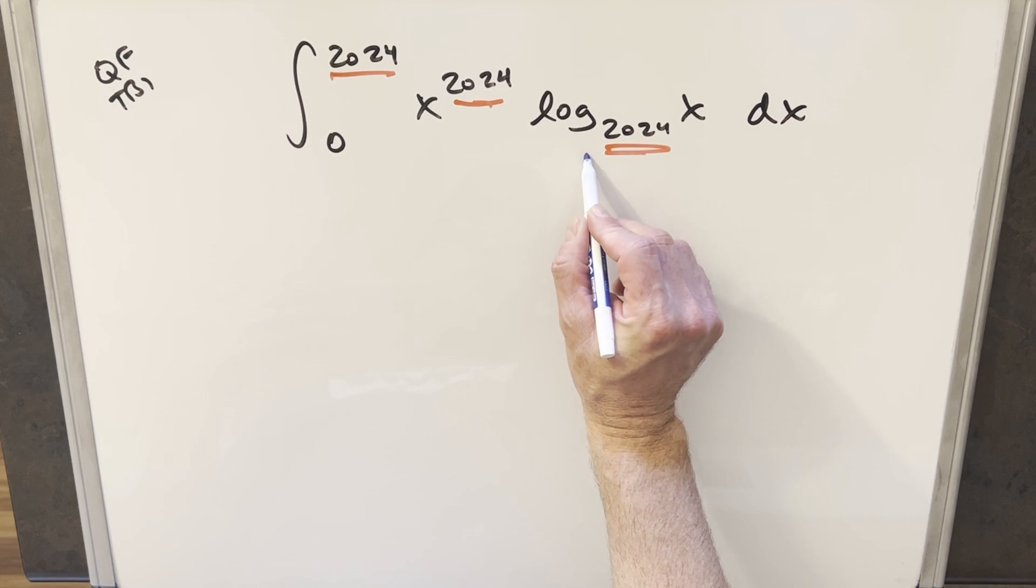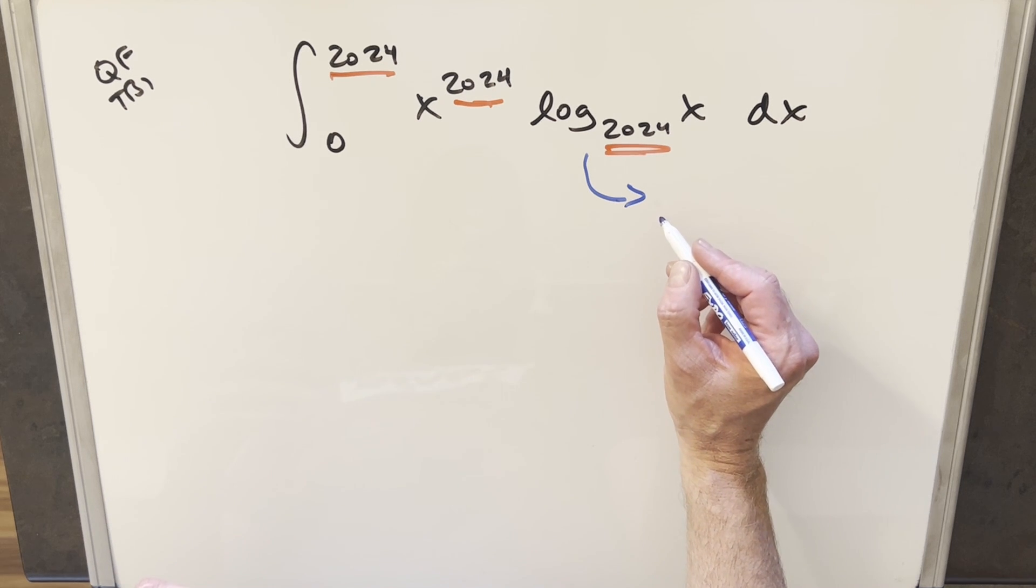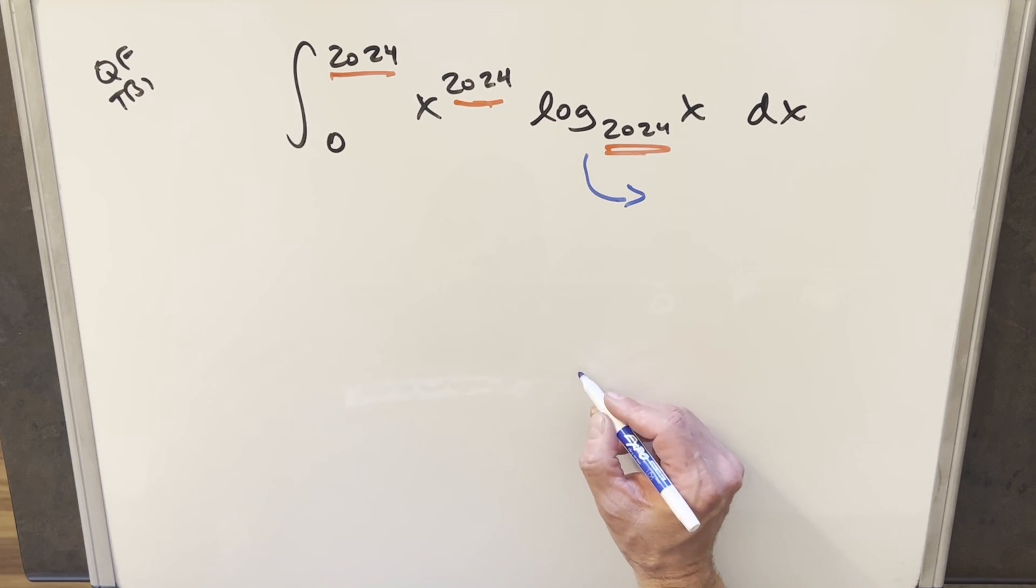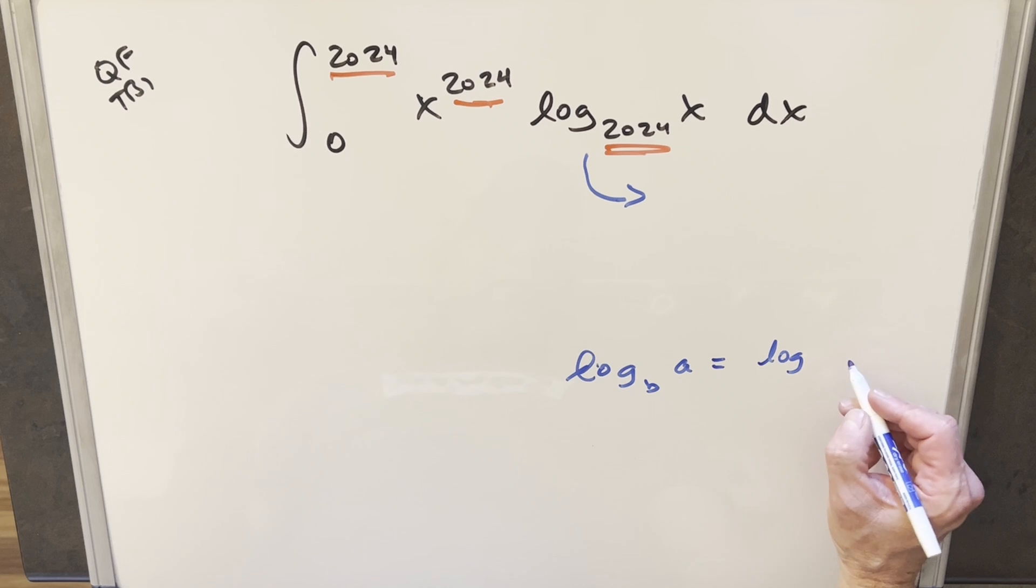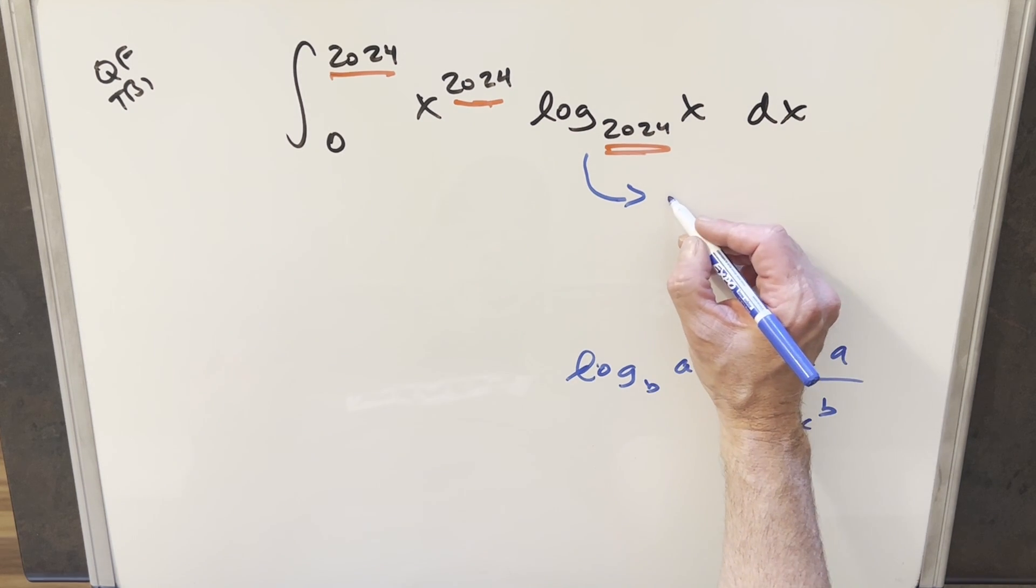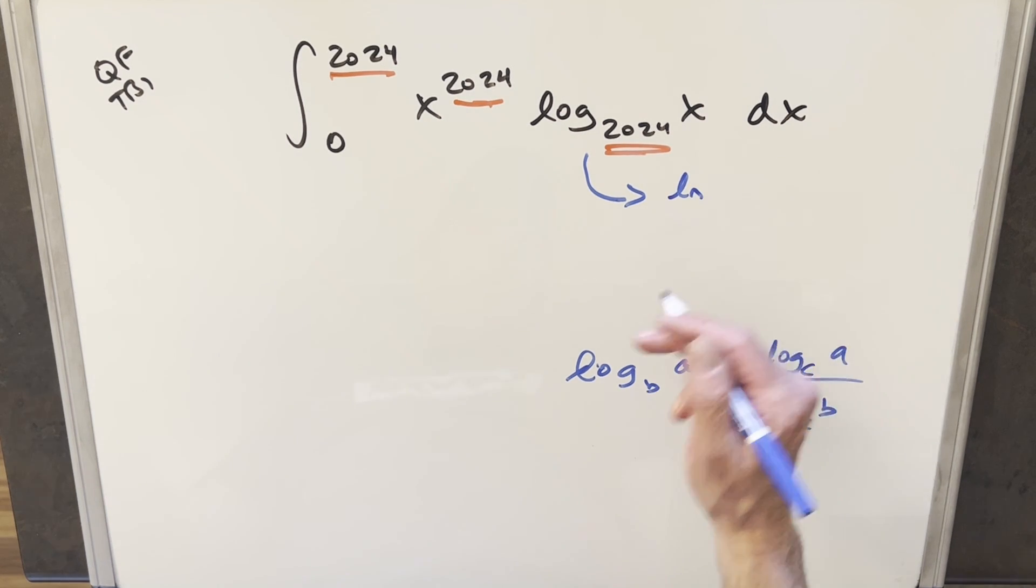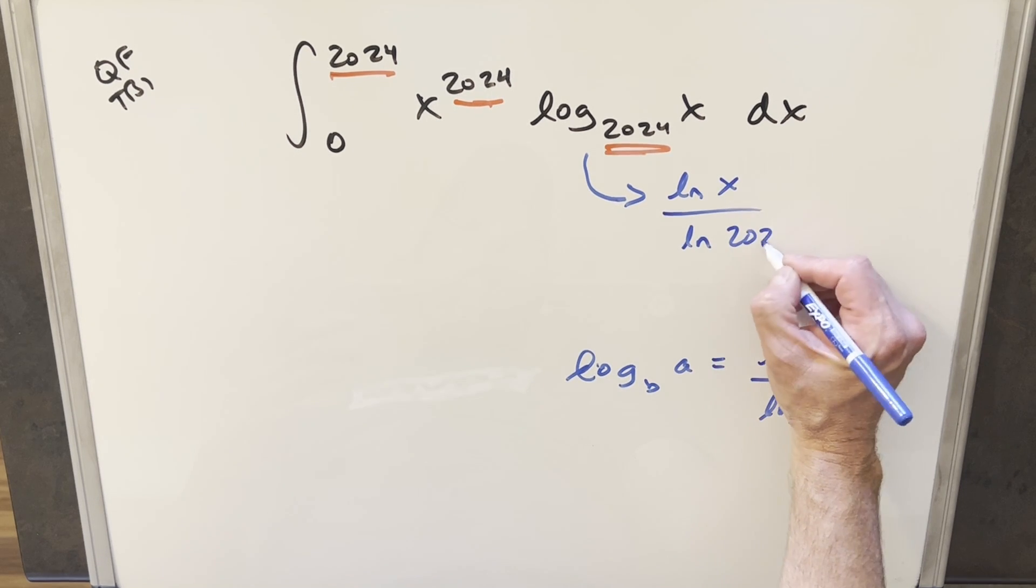So first what I'm going to do, I'd like to deal with natural log instead of log base 2024. So what I can do is use the change of base formula. The change of base formula tells us if we have something like log base B of A, we can rewrite this as log of A over log of B, where the base can be basically anything we want. So using this here, I can rewrite this as natural log of x over natural log 2024.